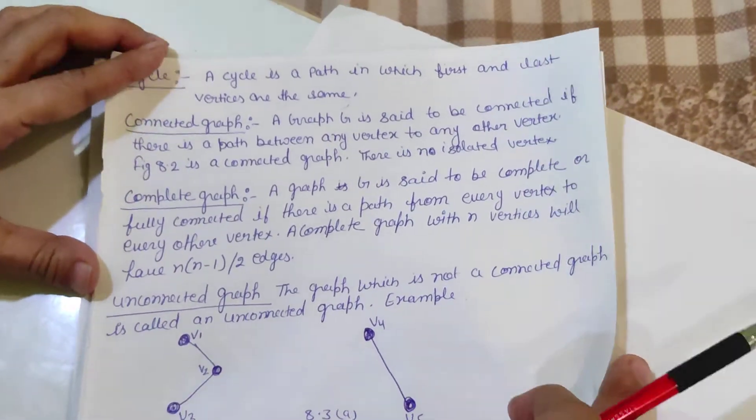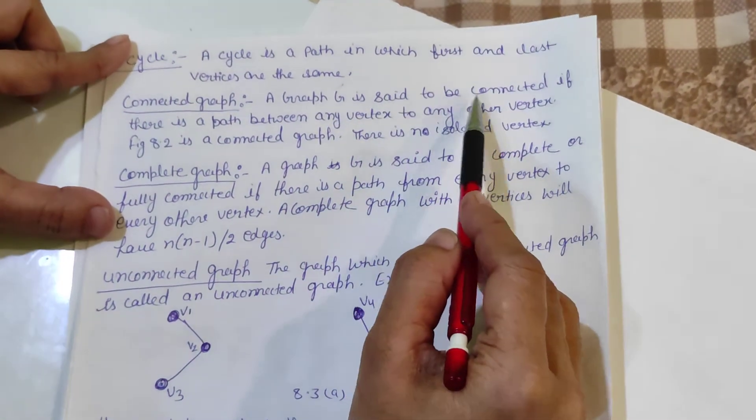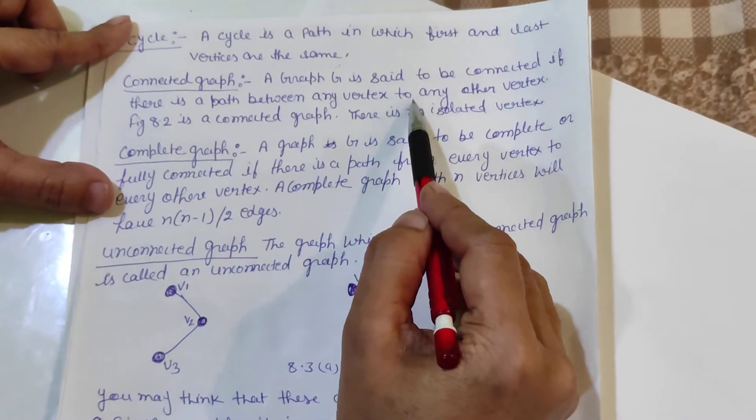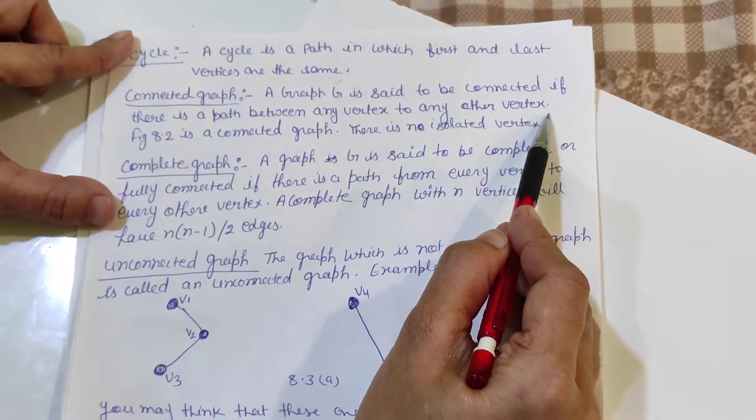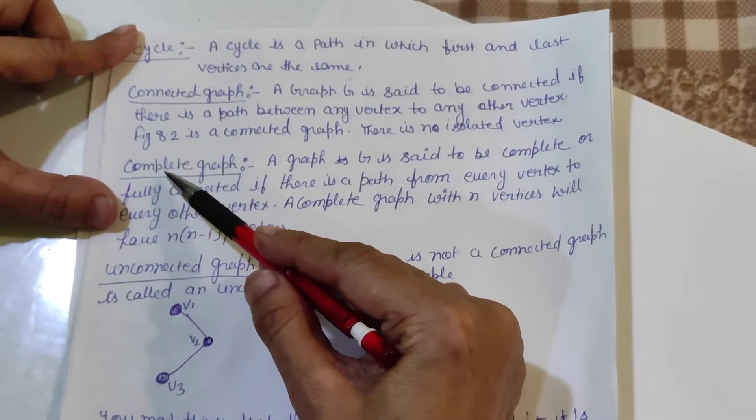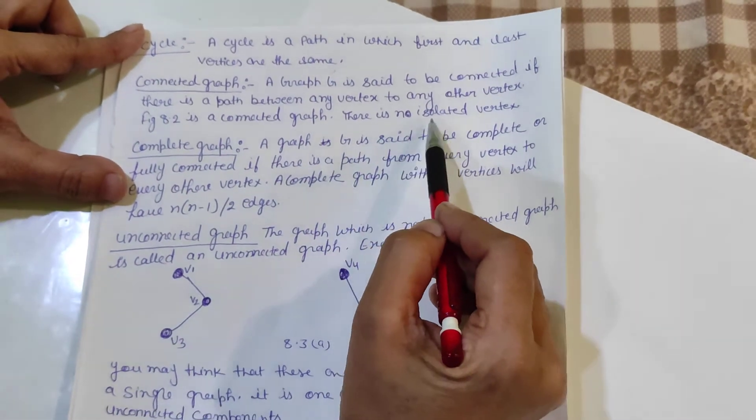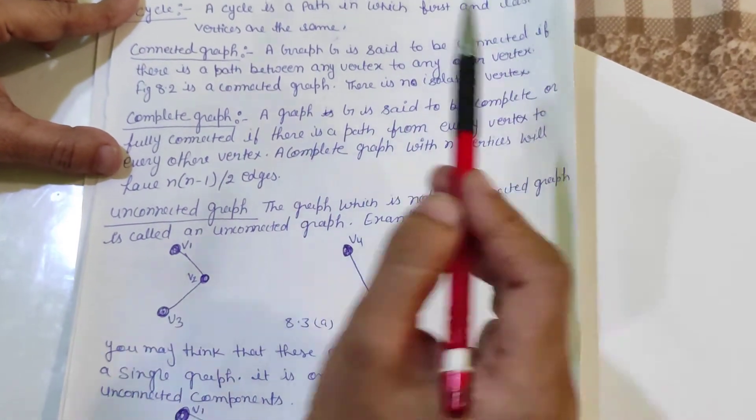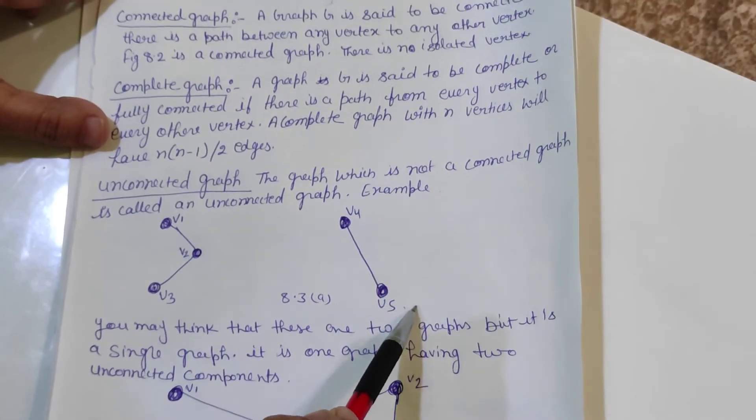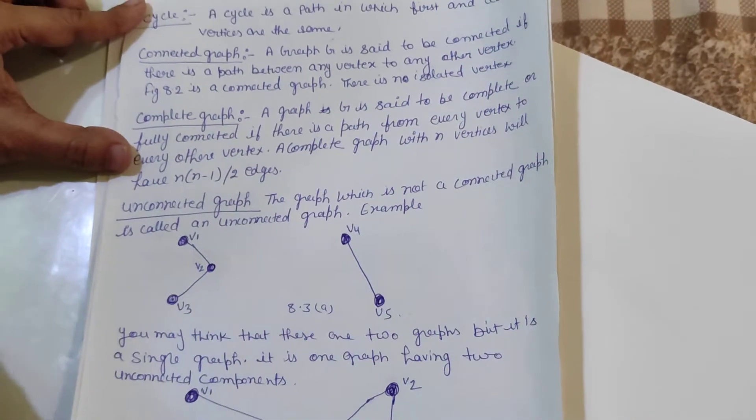Connected graph: A graph G is said to be connected if there is a path between any vertex to any other vertex. Figure 8.2 that I just explained to you is called the connected graph. There is no isolated vertex where each vertex is connected to another vertex.